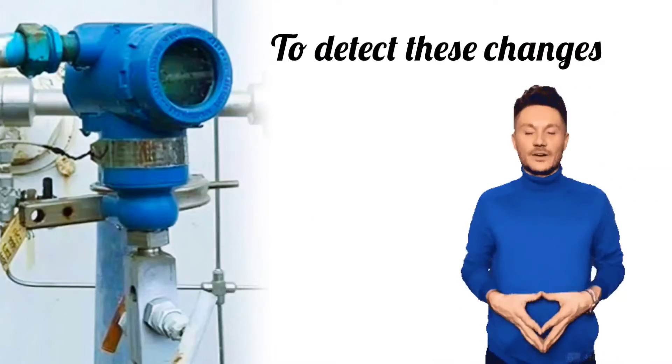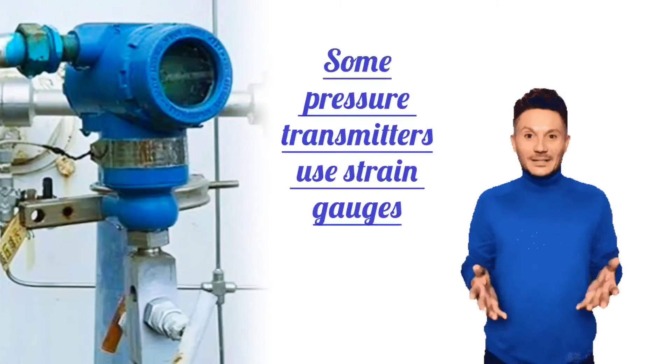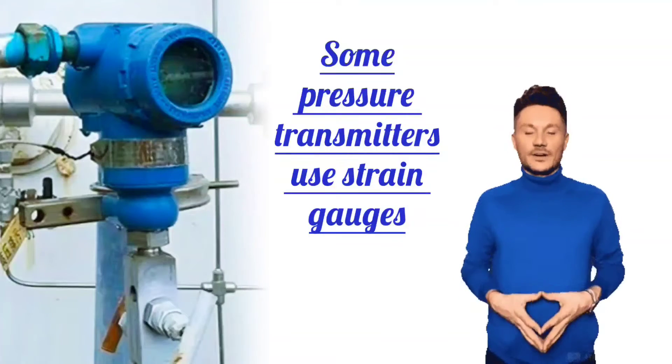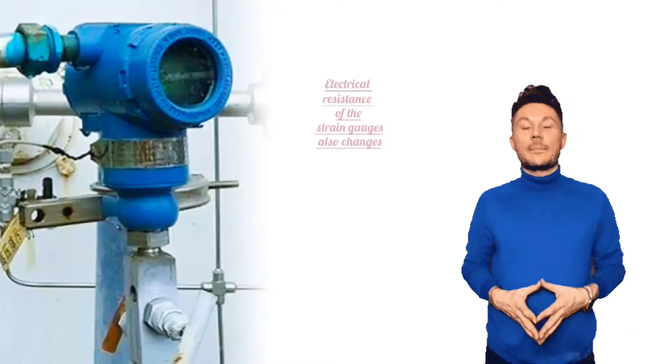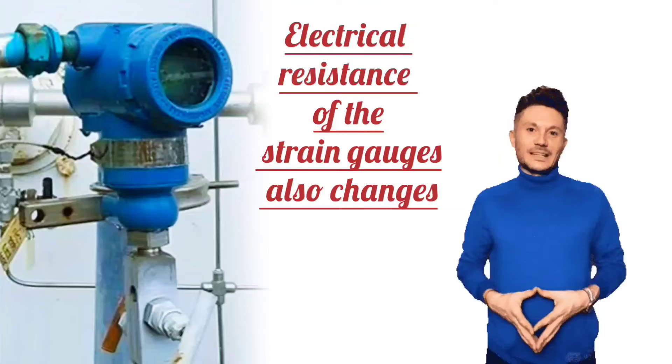To detect these changes, some pressure transmitters use strain gauge. When pressure increases or decreases, the electrical resistance of the strain gauge also changes.